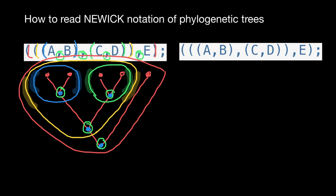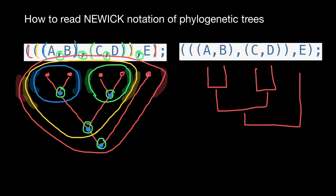Here on the right is the same notation as on the left — I just want to show you a different way to visualize it. So species A and B, species C and D — we connect them as follows — and species E is going to be here. Now we have the same phylogenetic tree, which looks slightly different, but it is the same phylogenetic tree as on the left.